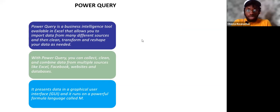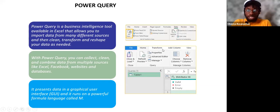If you look at this image, this is a sample of the Power Query editor. We'll see all those reports in a bit, but this is what it looks like — you have File, Home, Transform, Add Column, and other different tabs.